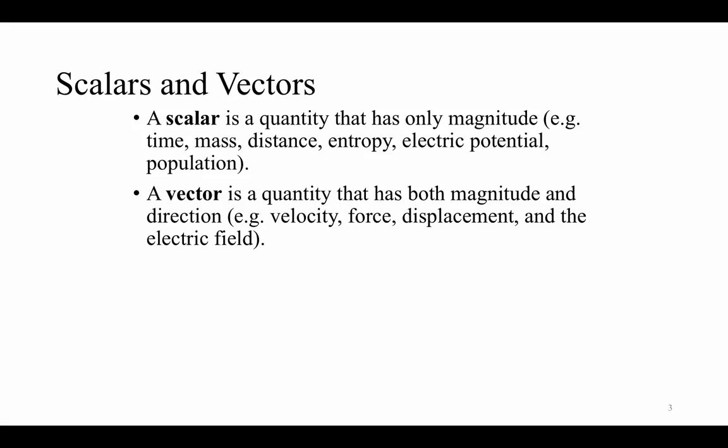What's a scalar? A scalar is a quantity that has only magnitude. There are several examples of scalar quantities that we use in physics: time, mass, distance, entropy, electric potential, and population are all examples of scalar quantities. They're usually represented by a single real number. However, scalars can be functions of position, time, etc. For instance, the mass of a particular body may be a function of position — in other words, a body may weigh more depending on where it's located.